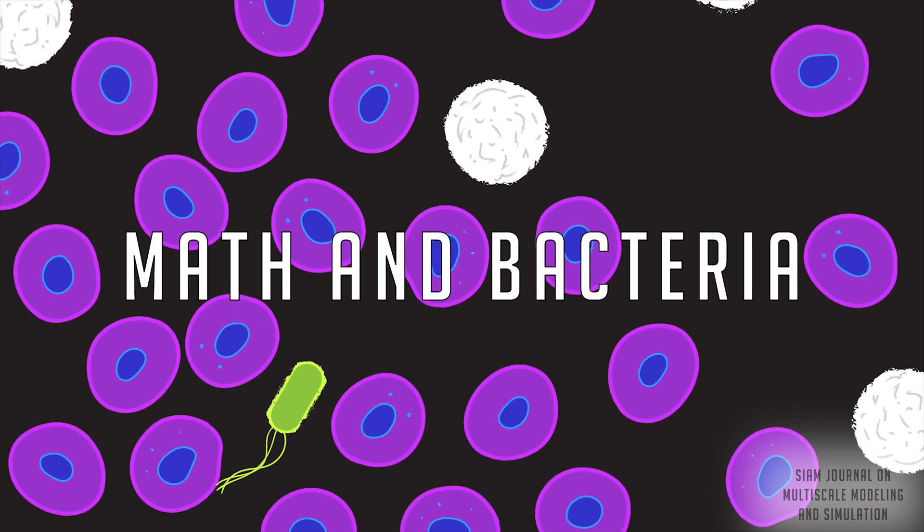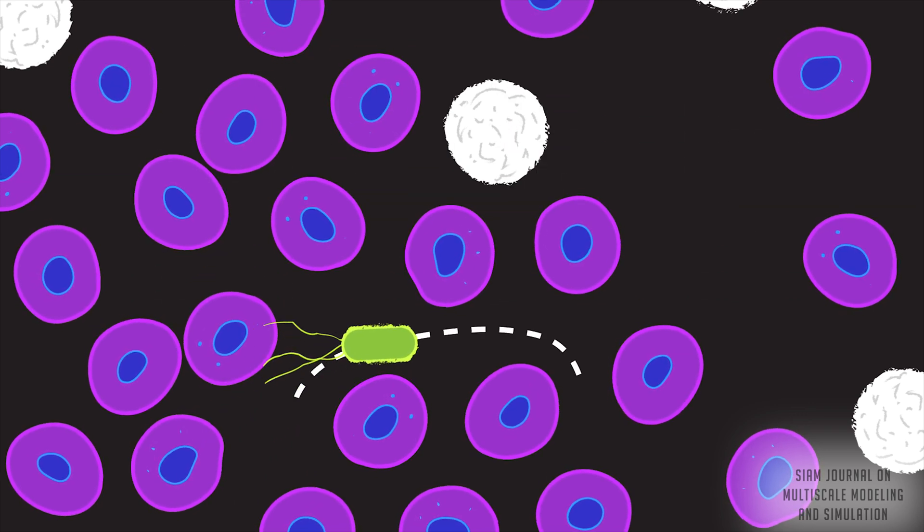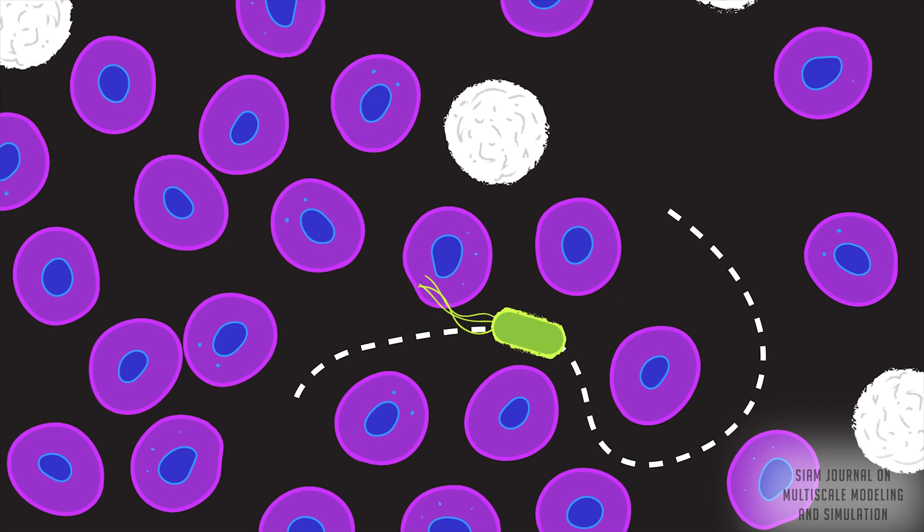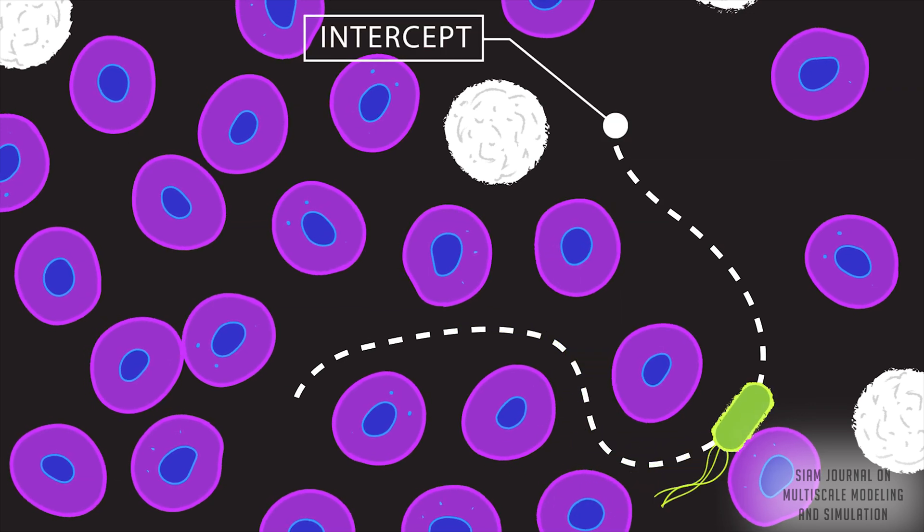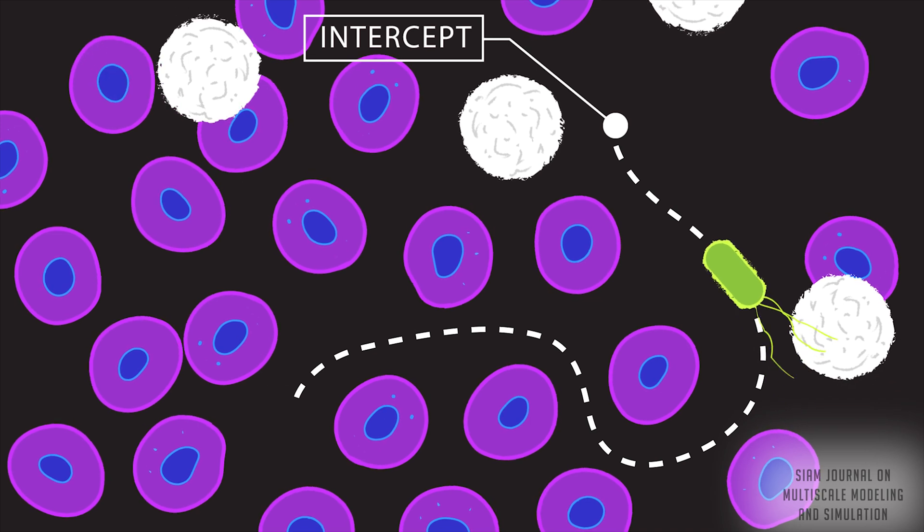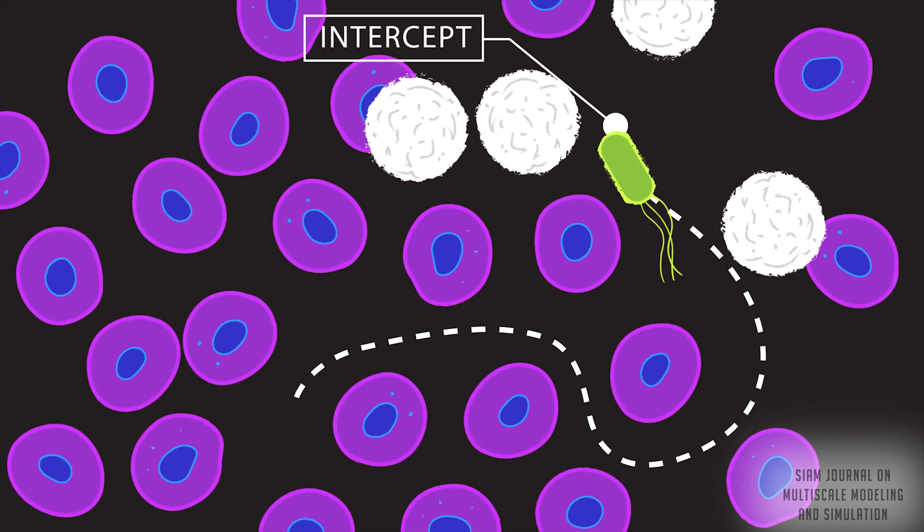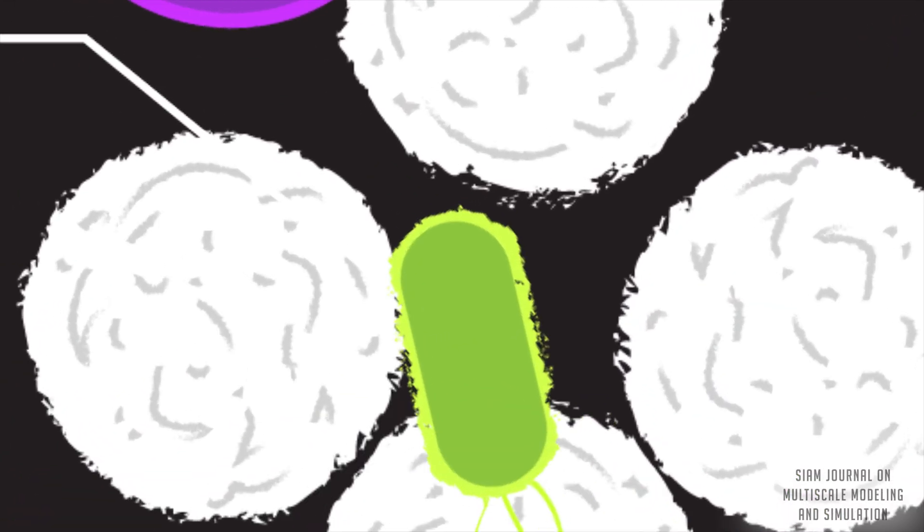Like all single-celled organisms, the deadly bacteria E. coli can sense the chemical composition of its surroundings and move accordingly. Multi-scale methods allow researchers to predict where the bacteria will migrate over large space and time scales, which can help medical professionals and the public be more prepared.